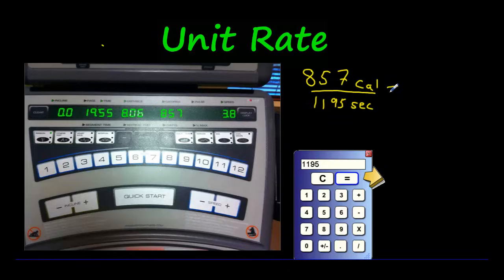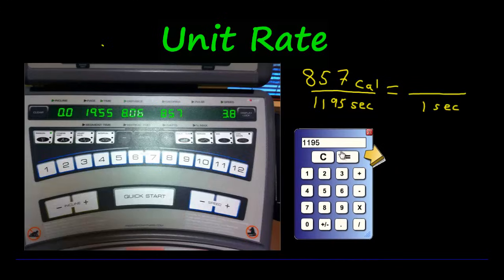My question to you is, turn this into a unit rate for one second. How many calories does he burn every second? We had to divide this by 1195, so you're going to do the same to the numerator. Let's see what we get: 857 divided by 1195 equals 0.717 calories. That's less than a calorie a second. That is an insane amount of energy that this person is burning. On average, most people in 20 minutes might burn 200 calories, 300 calories.